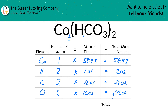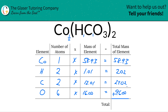Now to find the total mass of the entire compound, all we have to do is add this column together. When we add the column, we get a total of 180.97. The units here are in grams per mole, since we're finding molar mass.